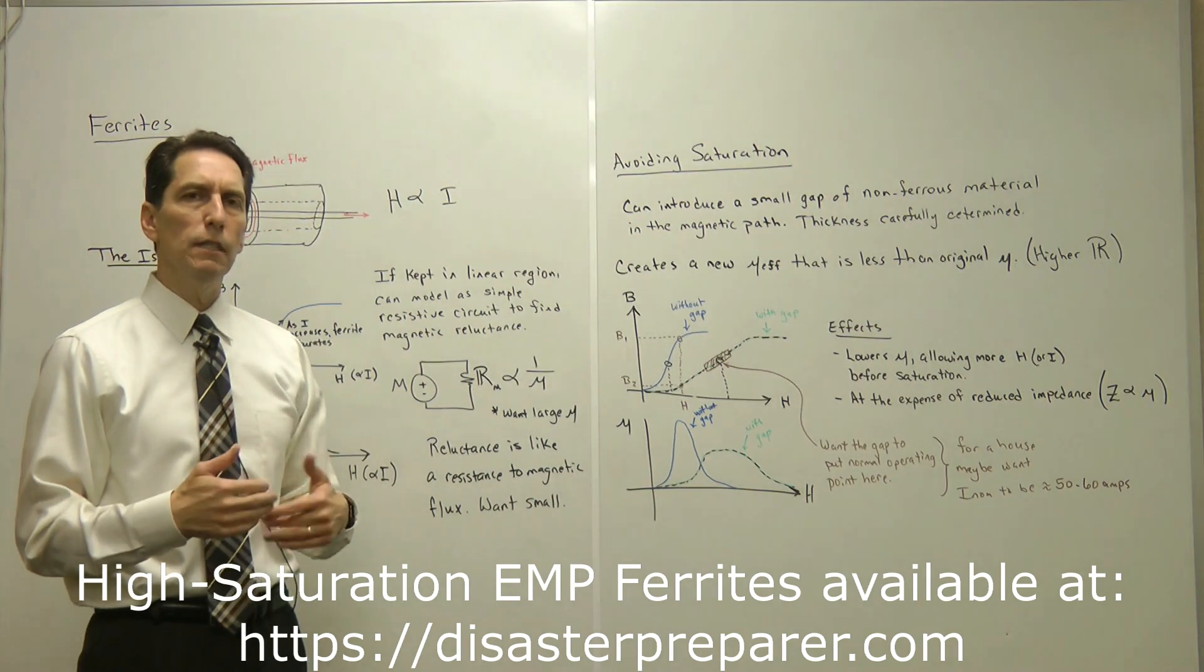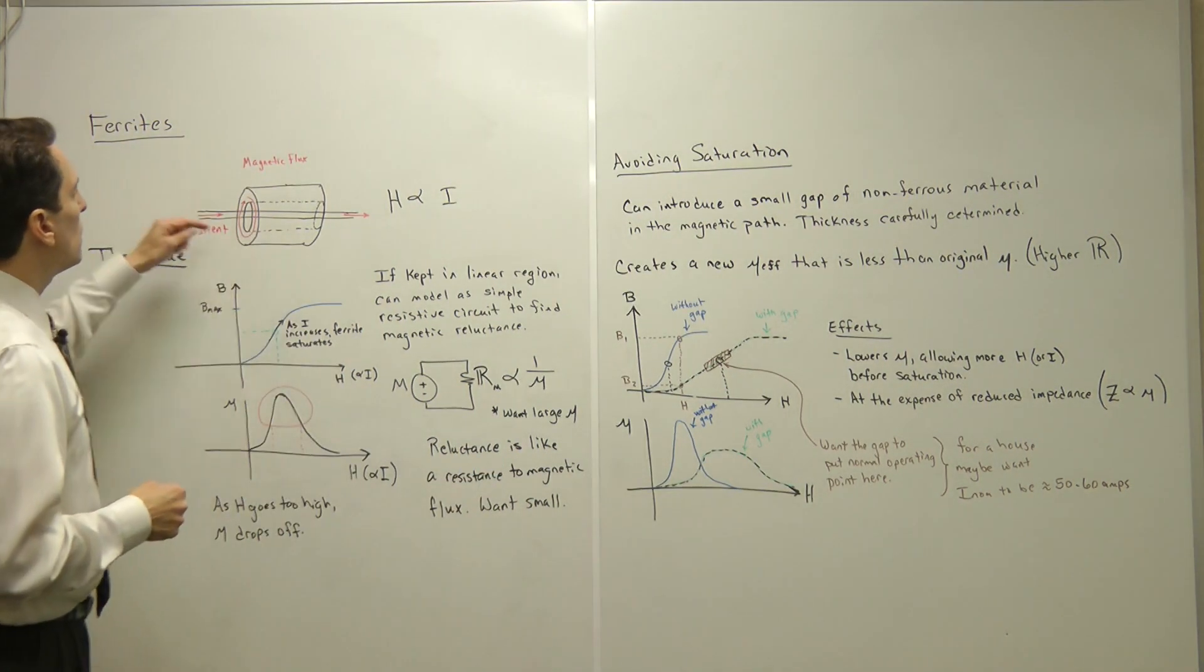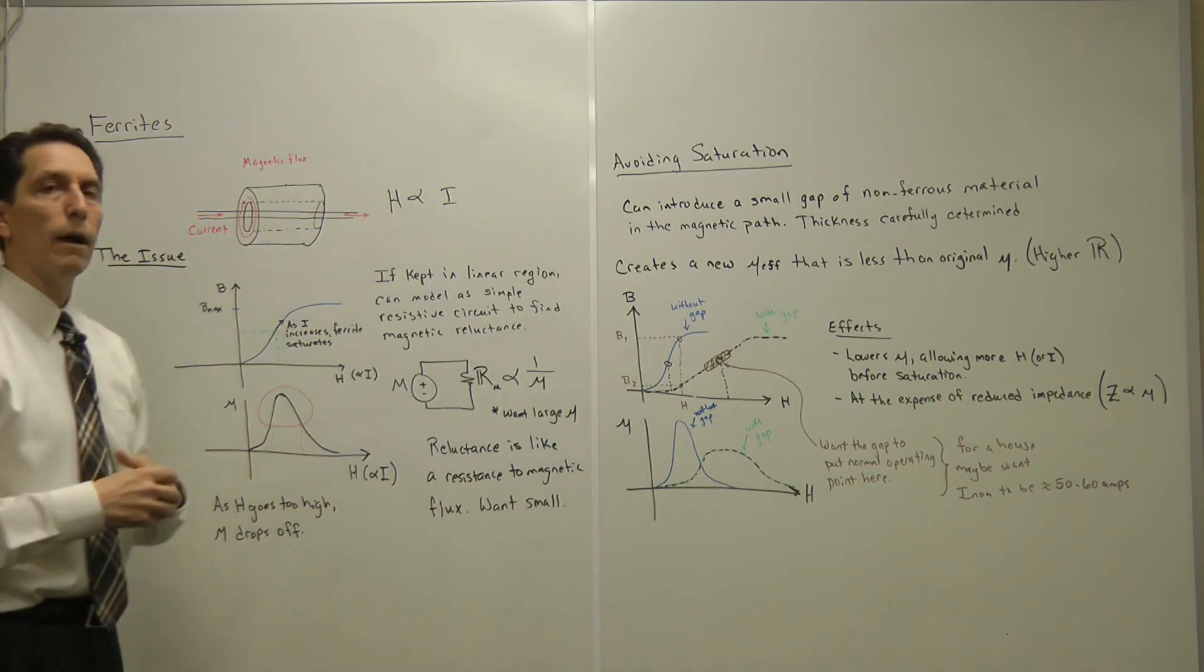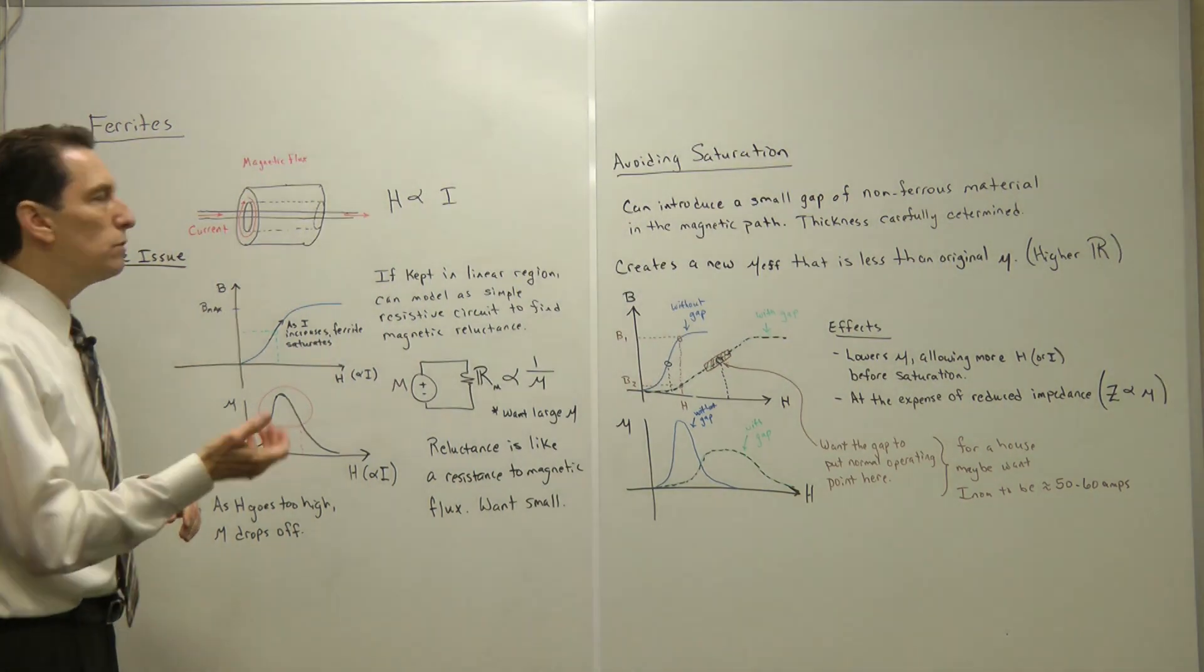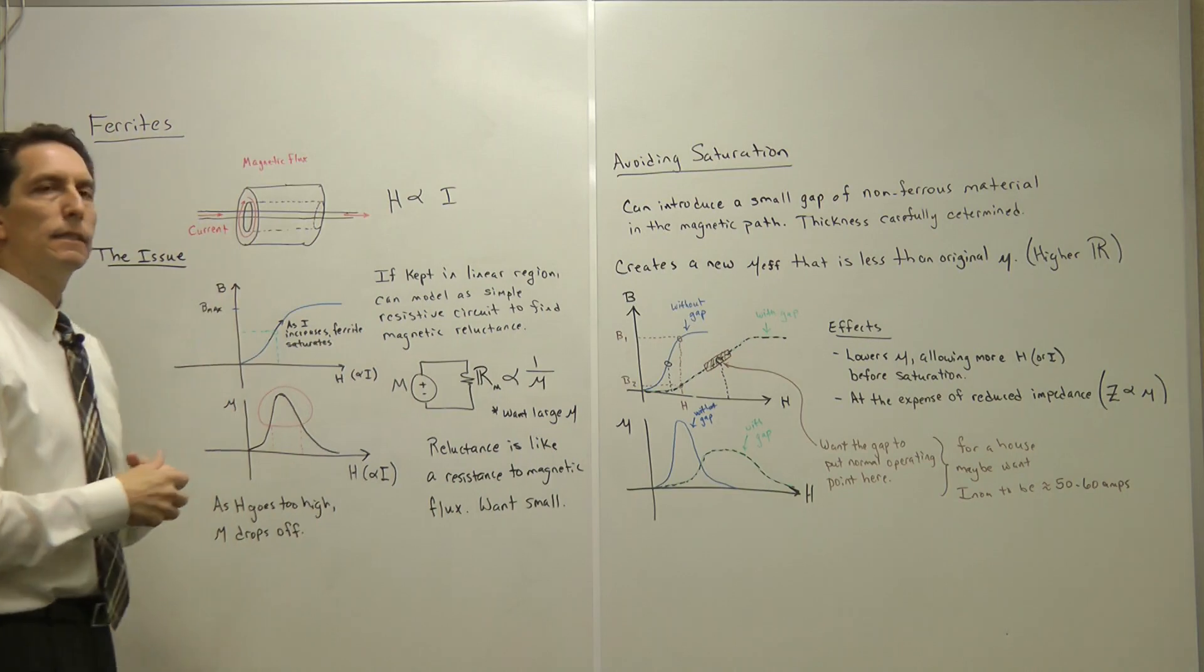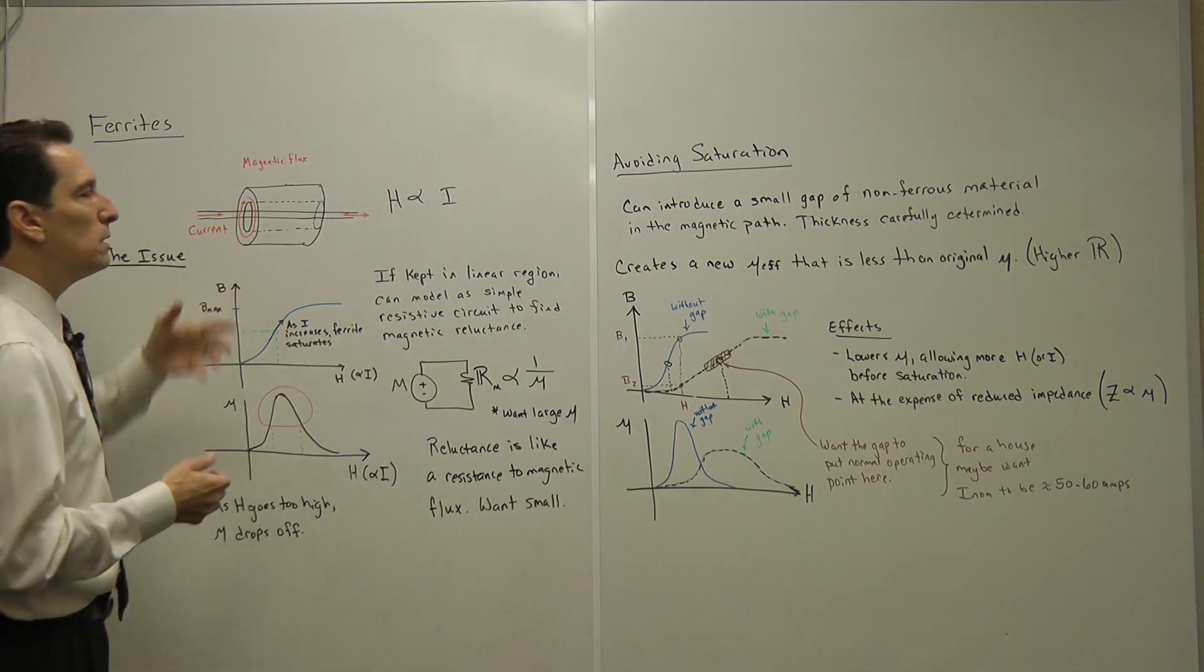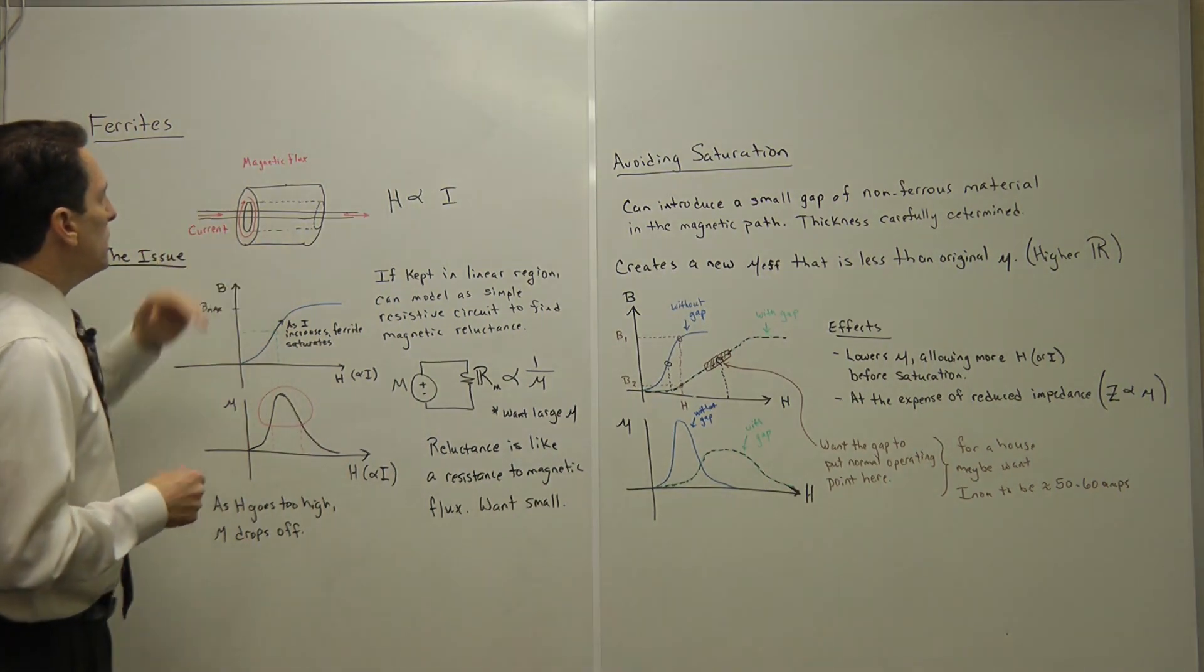So let's talk about what saturation is and then how you get past it. This picture shows a current going through a wire and then a ferrite around the wire. The idea is as the current goes through the wire, it develops a magnetic field that circles around the wire and that magnetic flux is collected inside of the ferrite. Based on the material, it collects it in different ways. That's the idea of what a ferrite is.